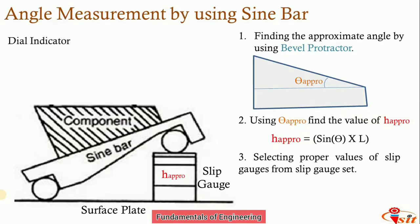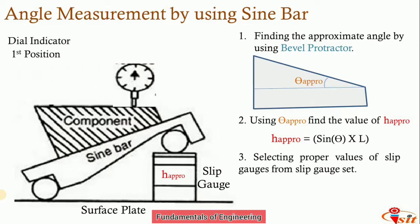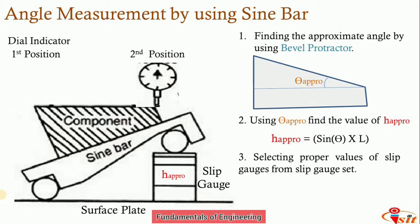To find the exact angle, check whether the top surface of the component and the surface plate are parallel to each other using a dial indicator. Move the dial indicator from the first position to the second position along the component surface. If the pointer does not move from its initial zero position, then H_approx equals H_exact. If there is pointer movement, adjust the height of the slip gauges by adding or removing gauges accordingly.